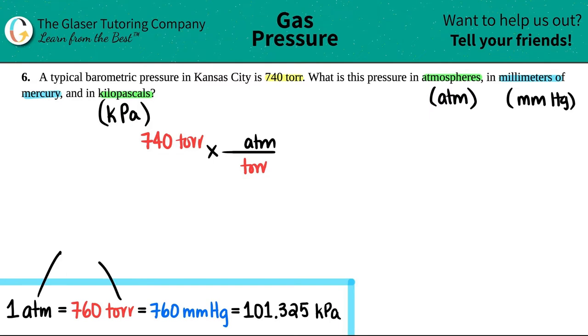So for example, atm and Torr is what we're using. One atm, so the one would go up on the top, is equal to 760 Torr. So 760 would go on the bottom. The units of Torr would cancel. And now you're just left with the atm. So all you got to do is 740 divided by 760. And this would essentially be 0.97 atm. So first conversion done.